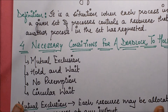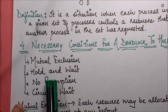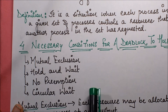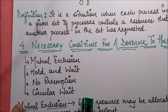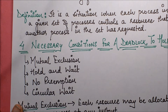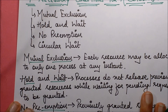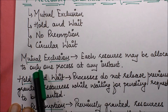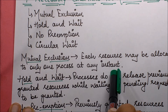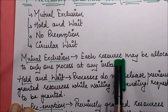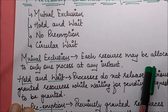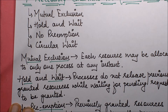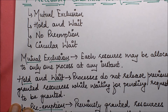The four necessary conditions for a deadlock to hold are: mutual exclusion, hold and wait, no preemption, and circular wait. Let's see what each one means. Mutual exclusion means each resource may be allocated to only one process at any instant — there will be no sharing of resources.